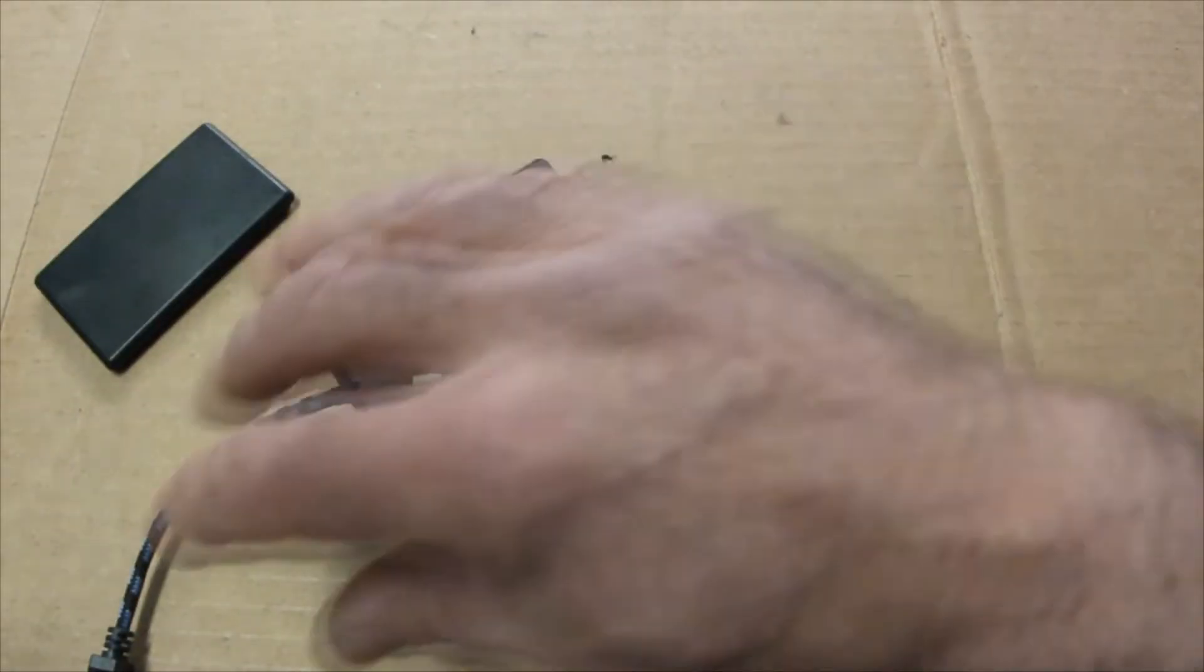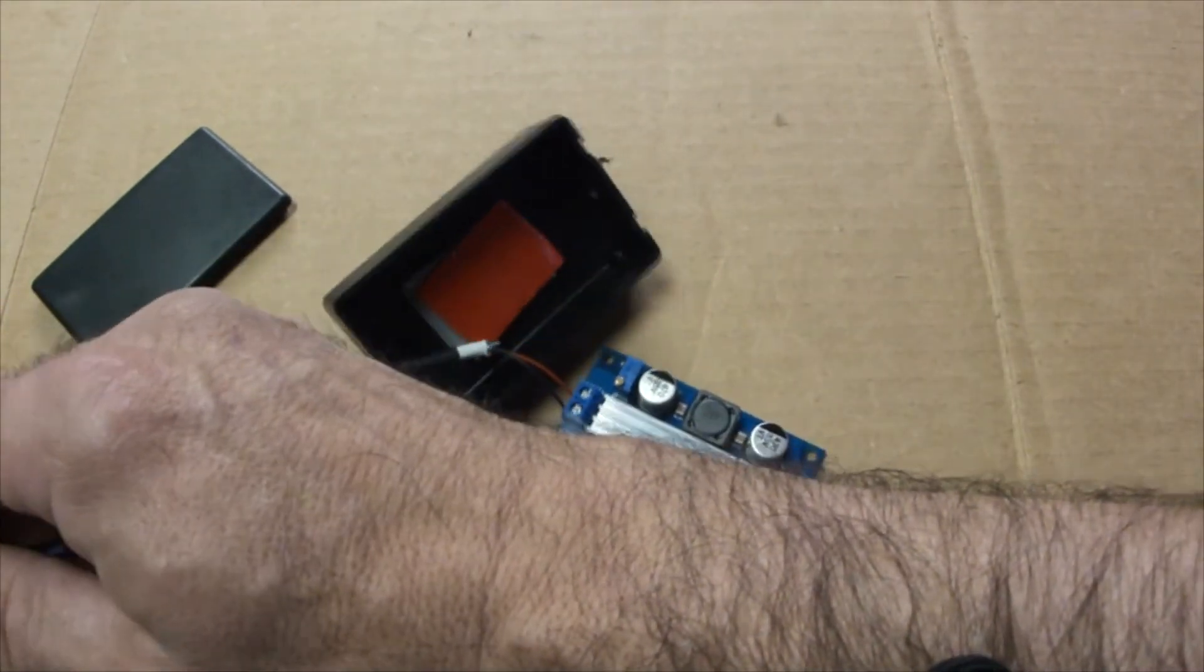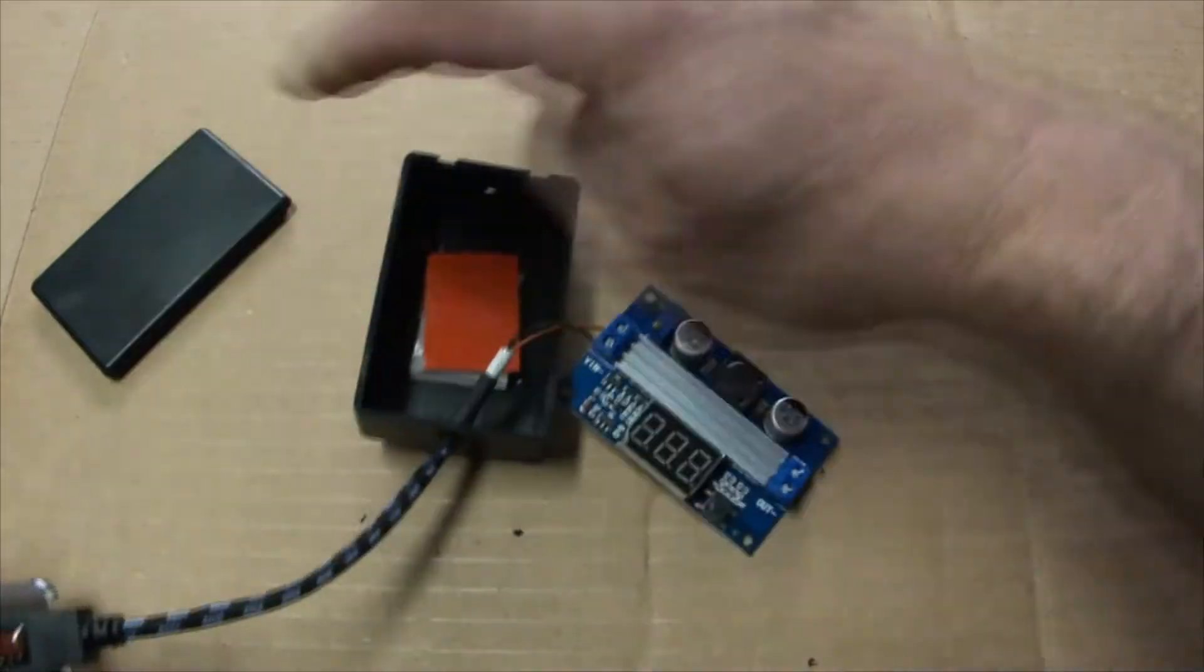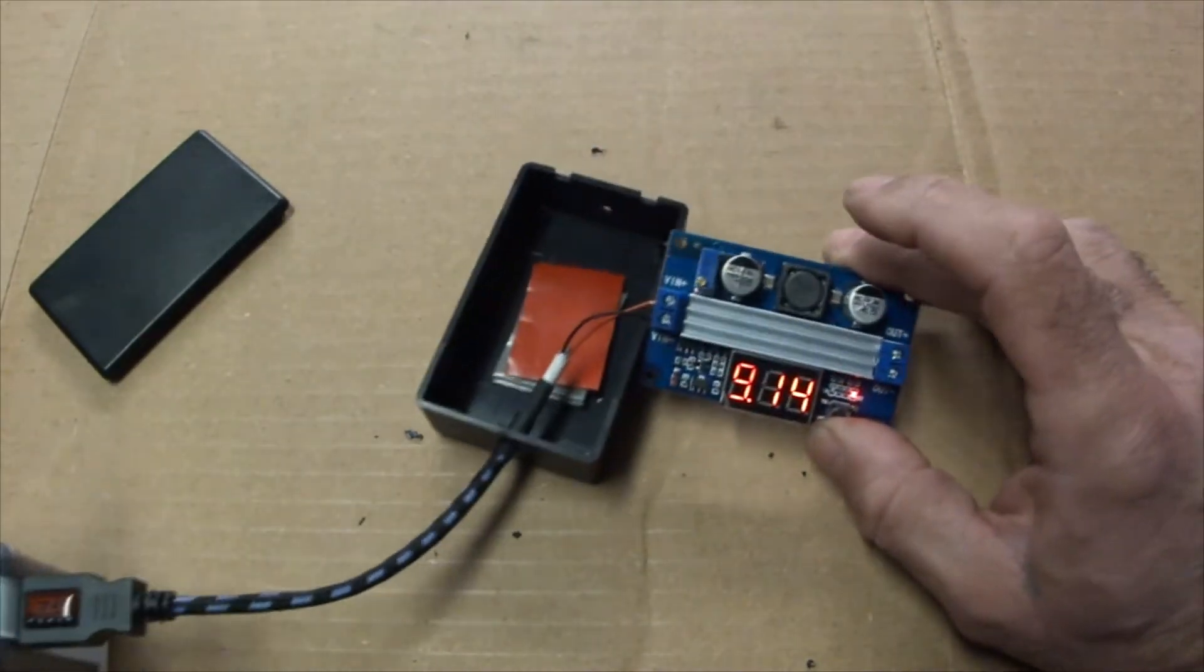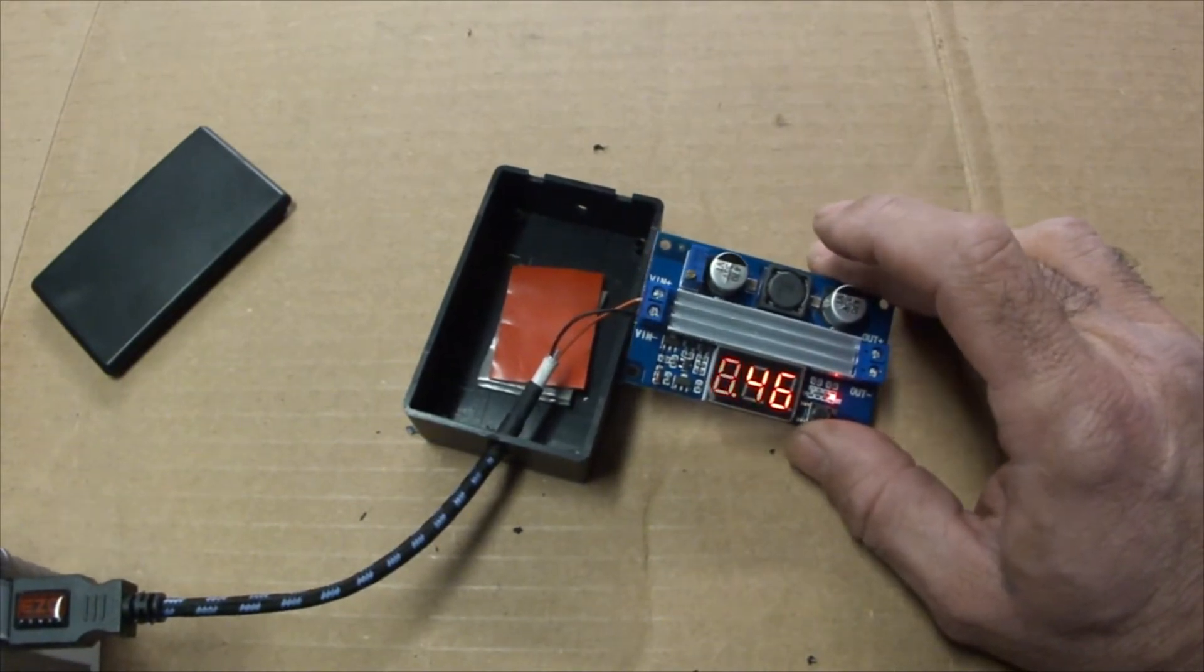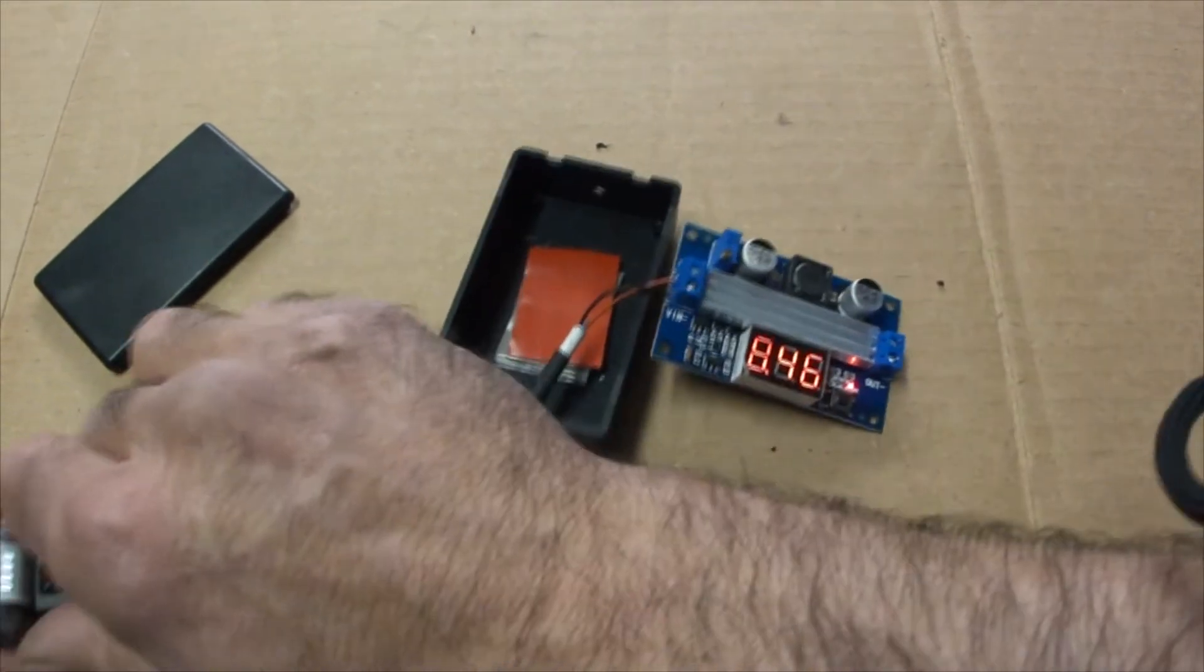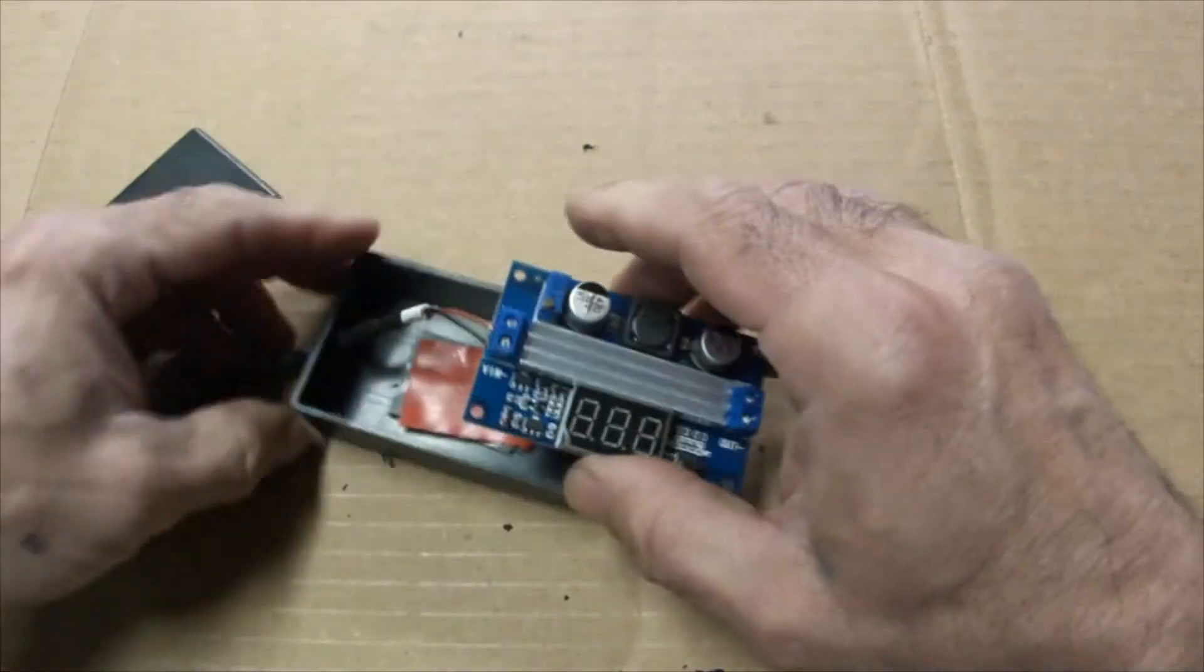We can test the orientation, we can just temporarily plug this in and we should get some lights. Turn the battery on, there we go. It's actually 8.46, I had played around with this and adjusted it already, but we know we've got power and we know it's in there correct.